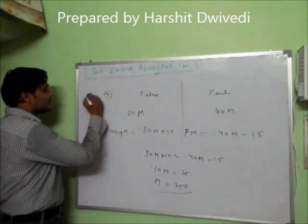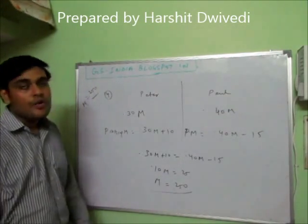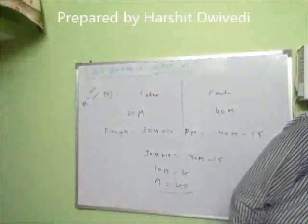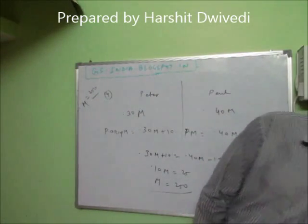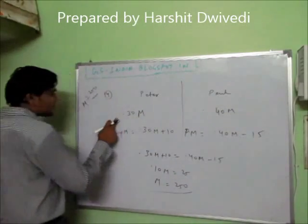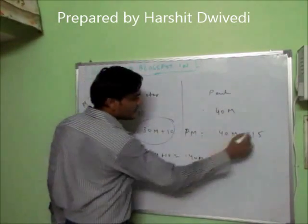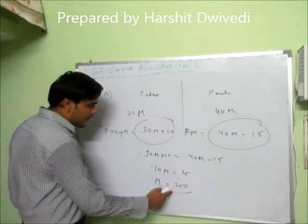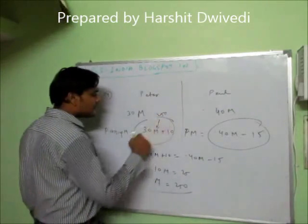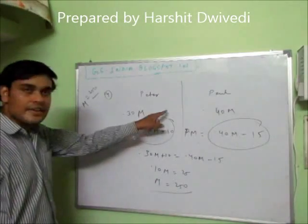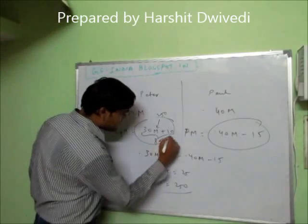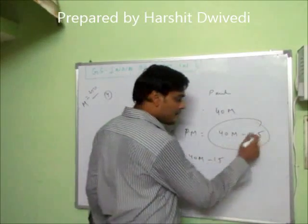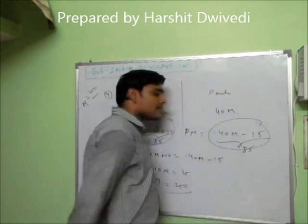So the total maximum marks have been calculated as 250. We have to calculate the passing marks. We can calculate the passing marks by putting the value of M in either of the two quantities. When we put M equals 250 here: 0.30 into 250 equals 75, and 75 plus 10 becomes 85. Similarly, 0.40 into 250 equals 100, and 100 minus 15 comes as 85. So the passing marks are 85.